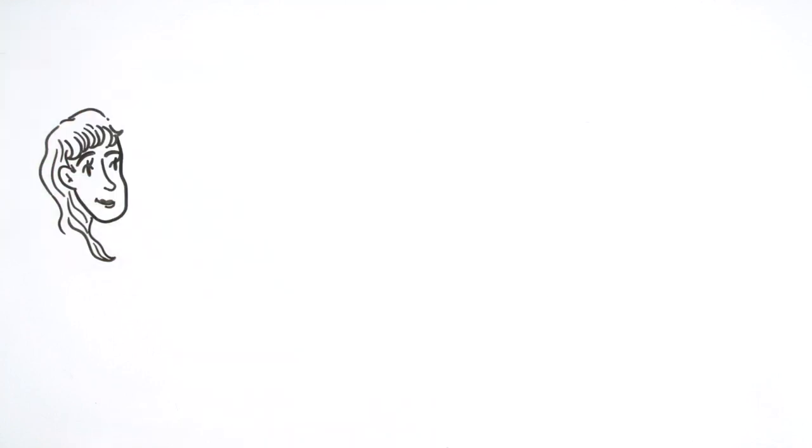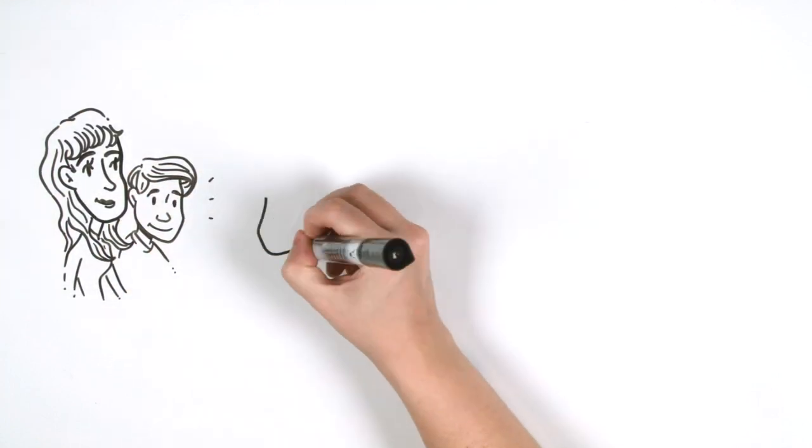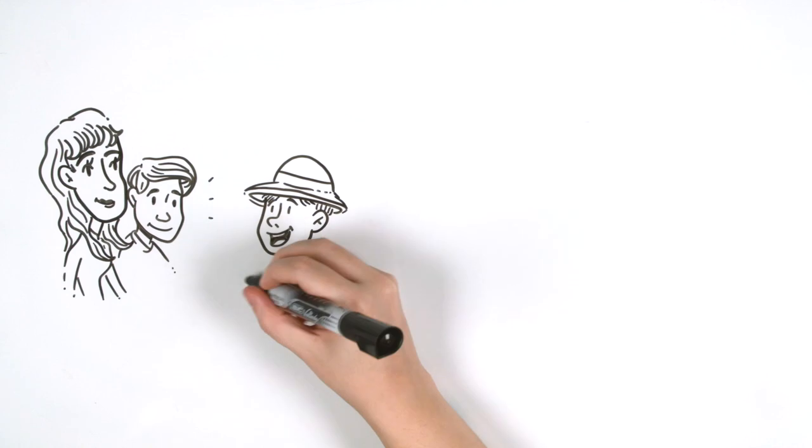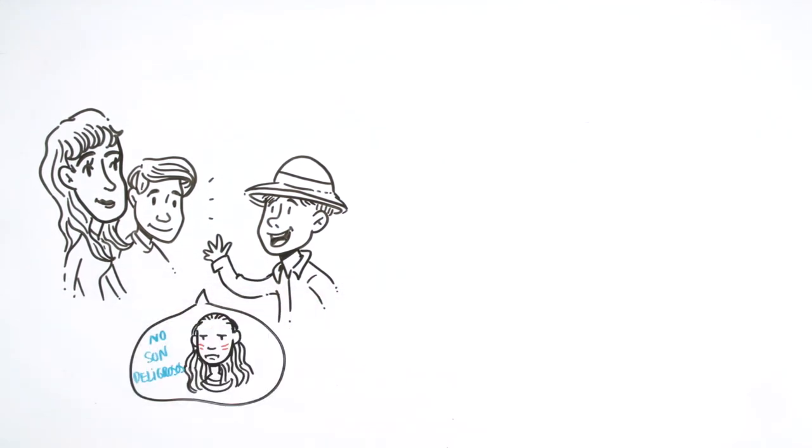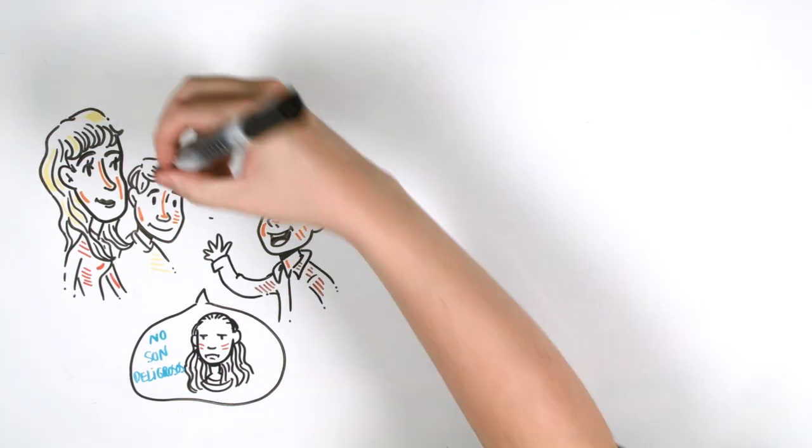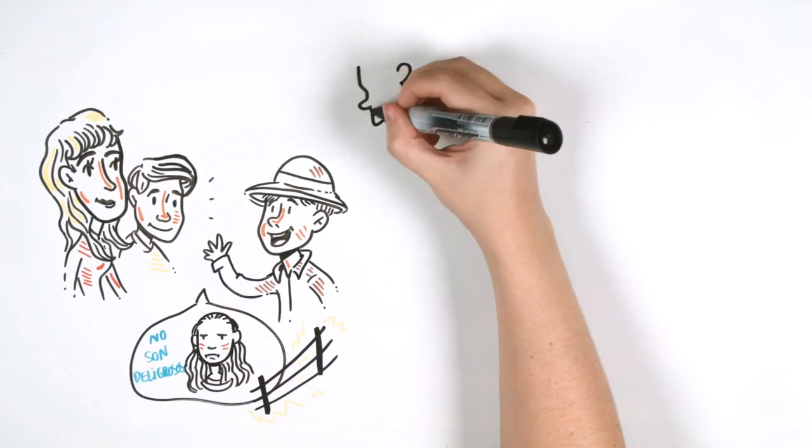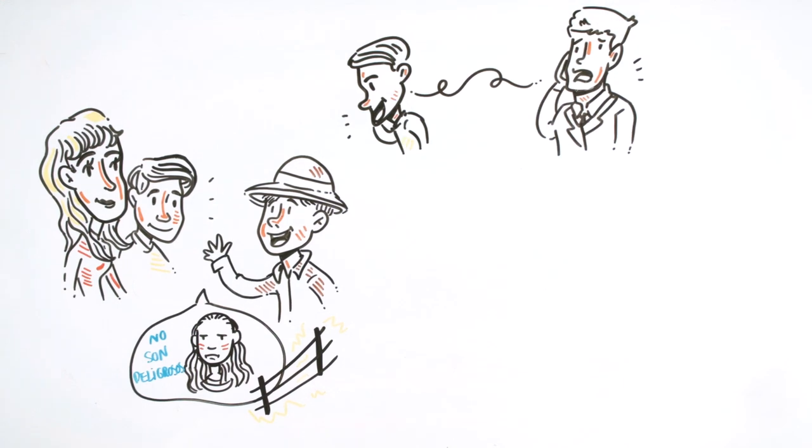Once in New Mexico, the guardian of the place began to explain to Bernard and Lenina what they needed to know about the place. They had nothing to fear from the savages since they were used to seeing tourists. They were also protected by an electrified fence. At the end of the talk, Bernard called Watson to turn off his perfume tap.